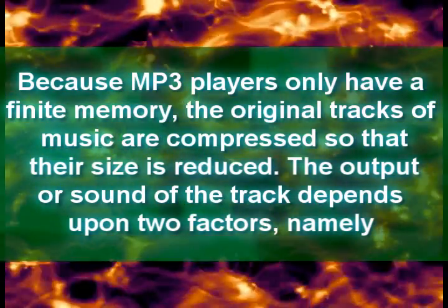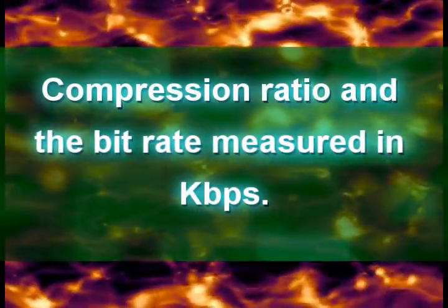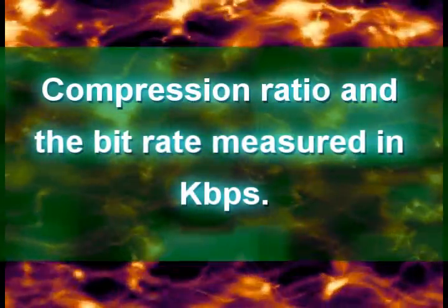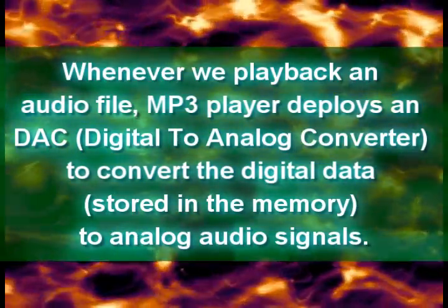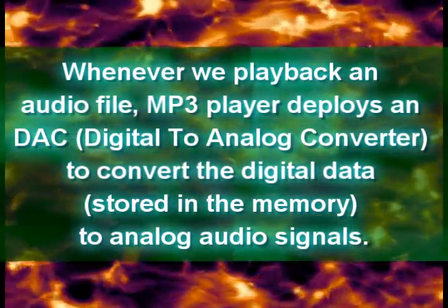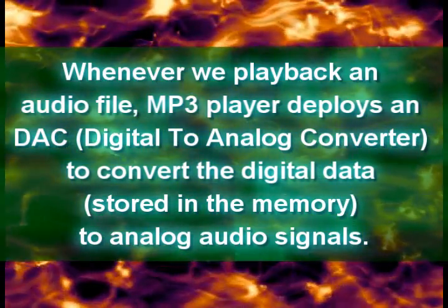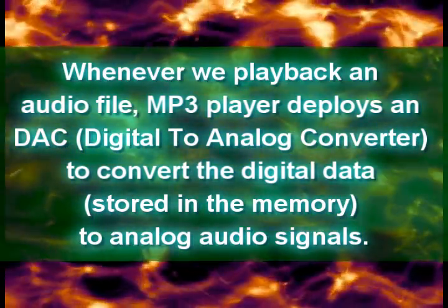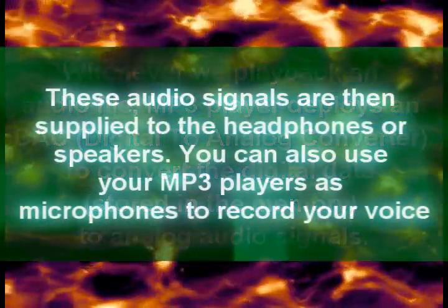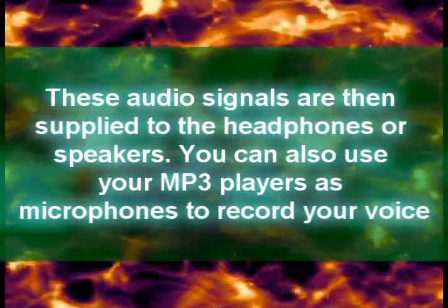The output or sound of the track depends upon two factors, namely the compression ratio and the bit rate measured in kbps. Whenever we play back an audio file, the MP3 player deploys a DAC, digital to analog converter, to convert the digital data stored in the memory to analog audio signals. These audio signals are then supplied to the headphones or speakers.